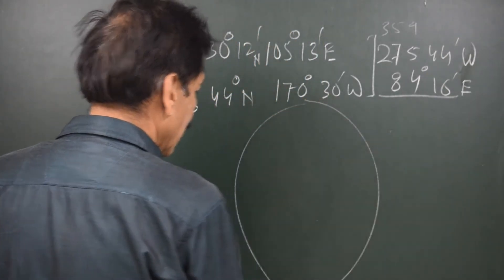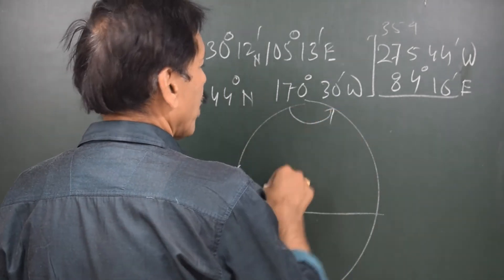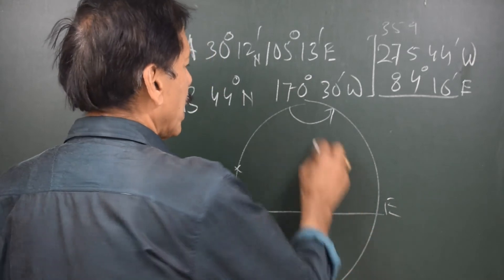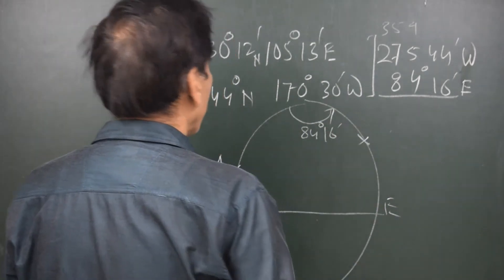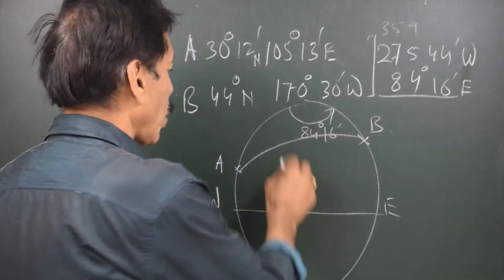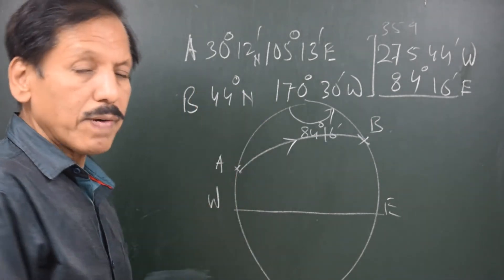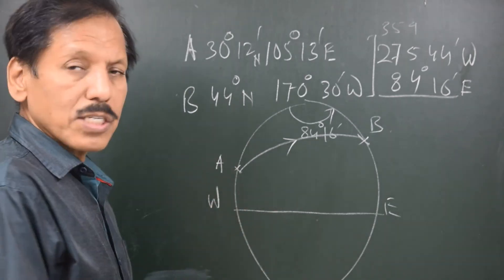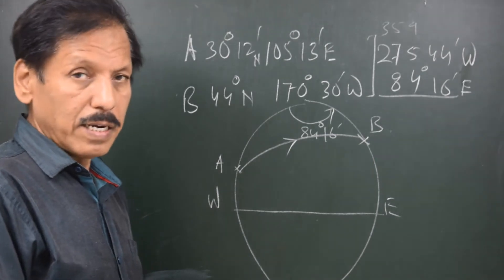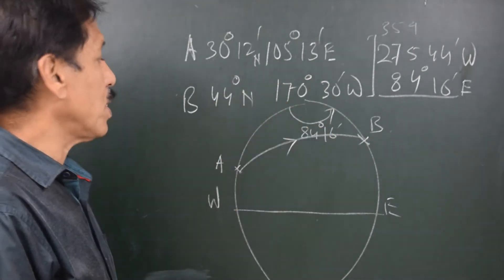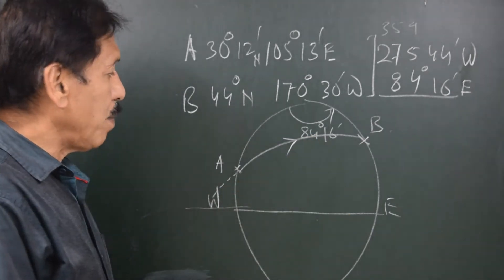In every case of great circle sailing we make a diagram like this. This is the equator. We are going eastwards — the D long is 84 degrees 16 minutes. This is the initial latitude A and the final latitude is over here, with the great circle course between A and B. There would be some vertex latitude which might be even higher than the final latitude. Since A and B are in the same hemisphere and the D long is 90 degrees or more, the vertex has to be in between.